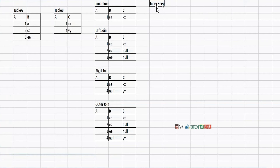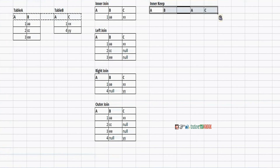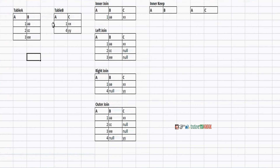What Keep will do is, instead of combining these two tables into a single table, it will maintain these two tables individually. However, the number of records in these two tables will be reduced based on the join condition. For example, inner keep is similar to inner join but the presentation will be different.